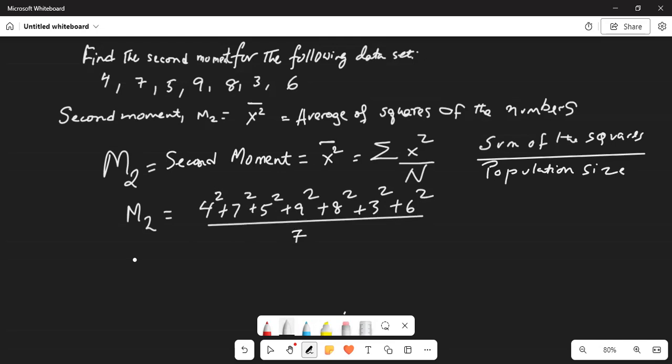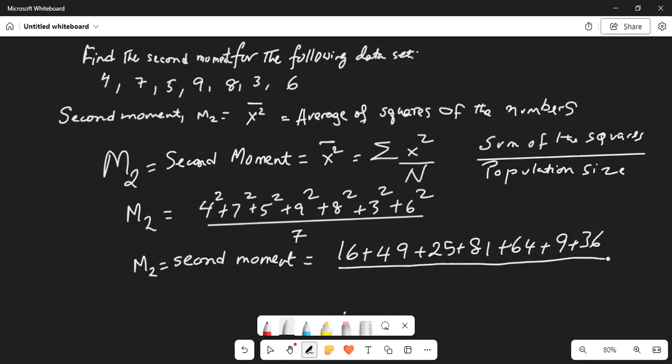So, M2 or second moment is equal to 16 plus 49 plus 25 plus 81 plus 64 plus 9 plus 36 over 4. Okay? I mean, sorry, over 7.